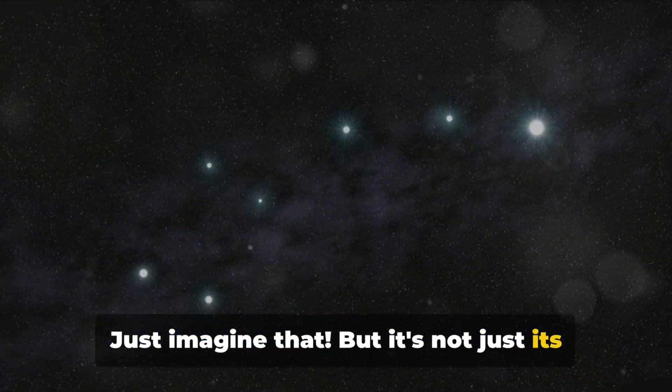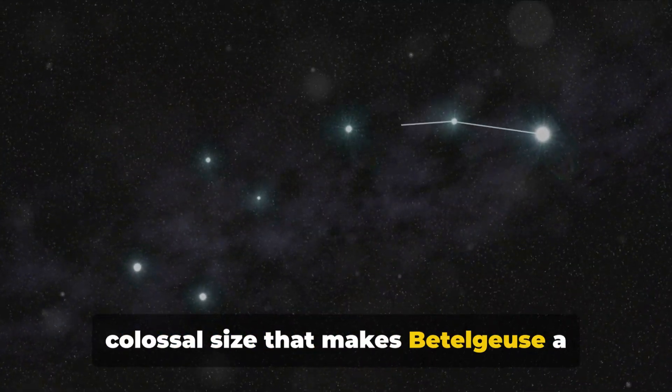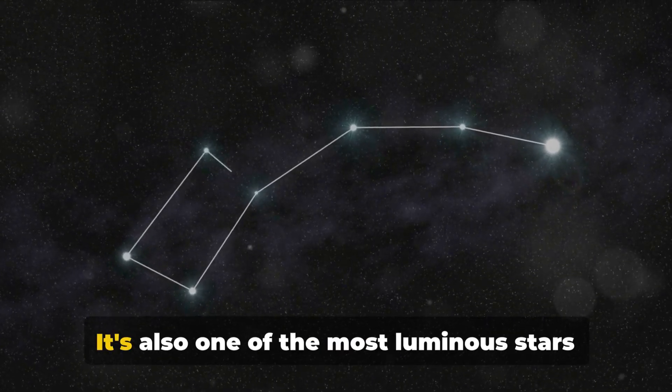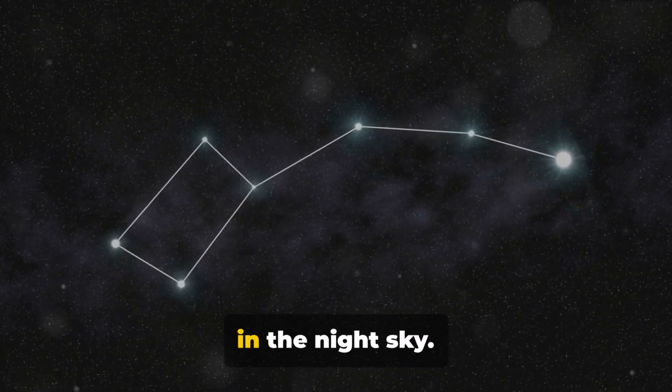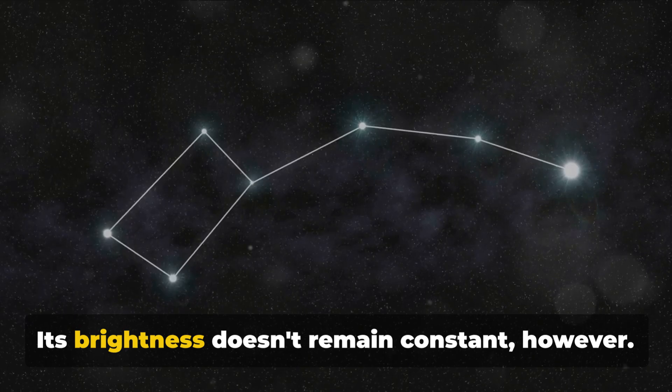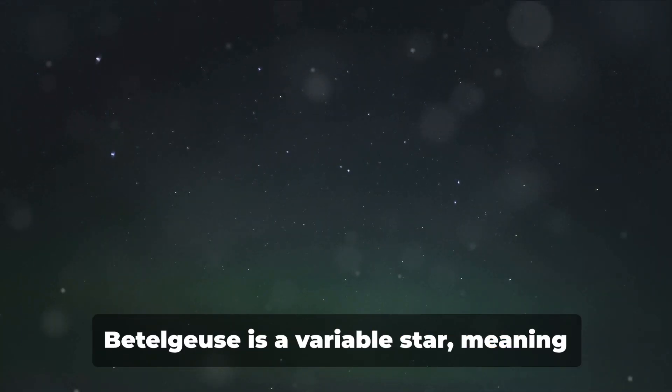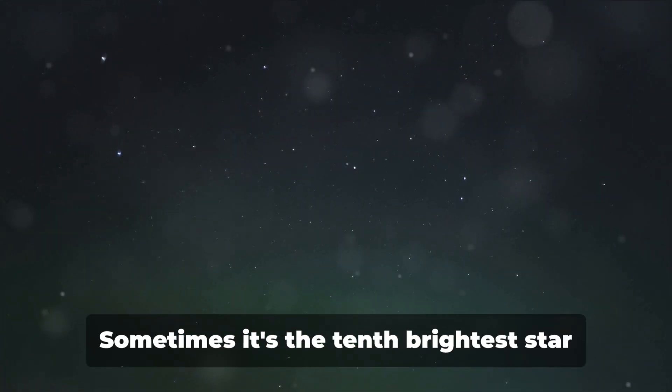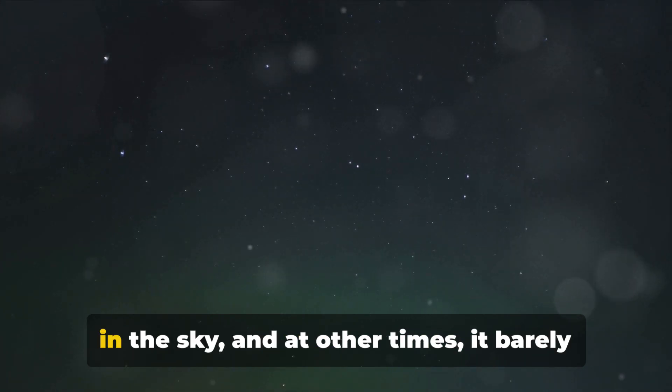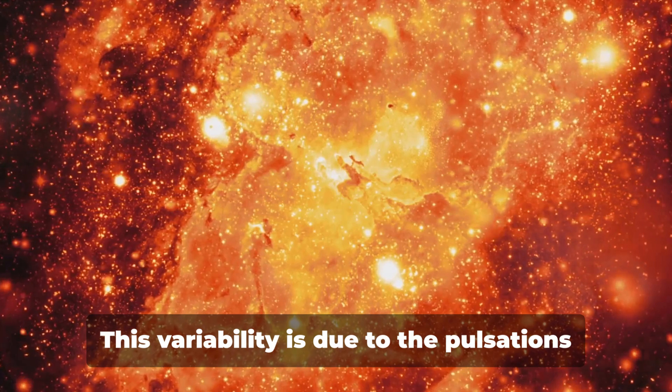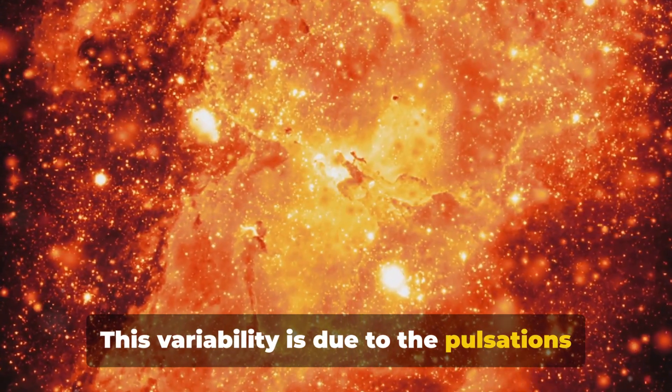But it's not just its colossal size that makes Betelgeuse a subject of intrigue. It's also one of the most luminous stars in the night sky. Its brightness doesn't remain constant, however. Betelgeuse is a variable star, meaning its light varies over time. Sometimes it's the 10th brightest star in the sky, and at other times, it barely makes it to the top 20.